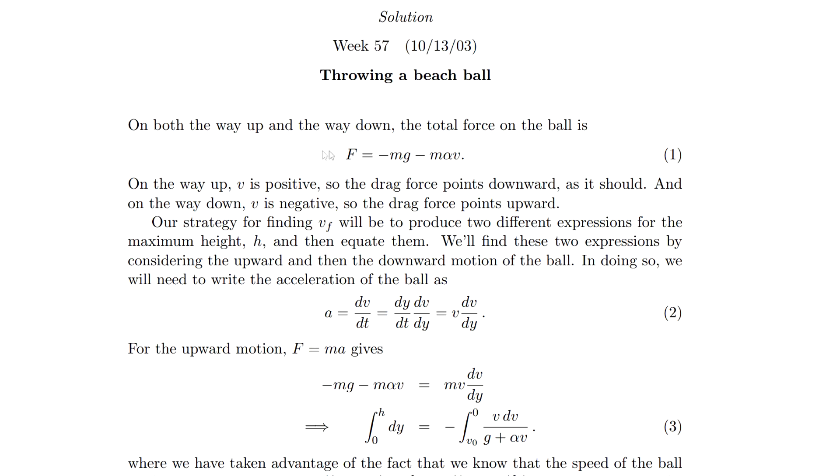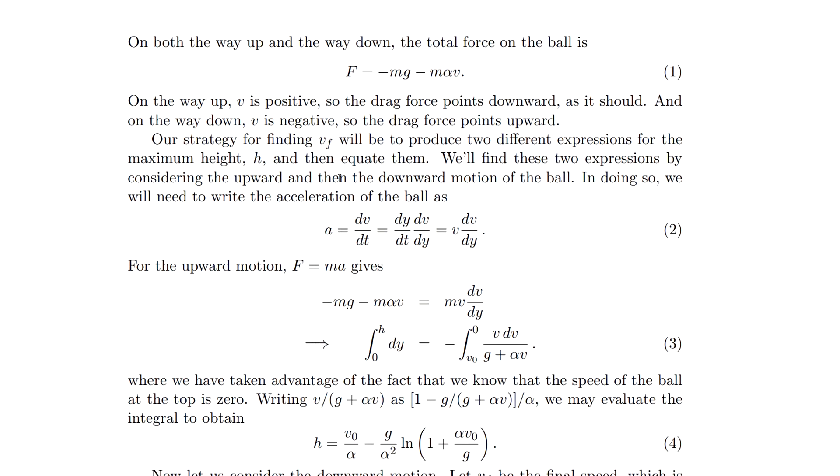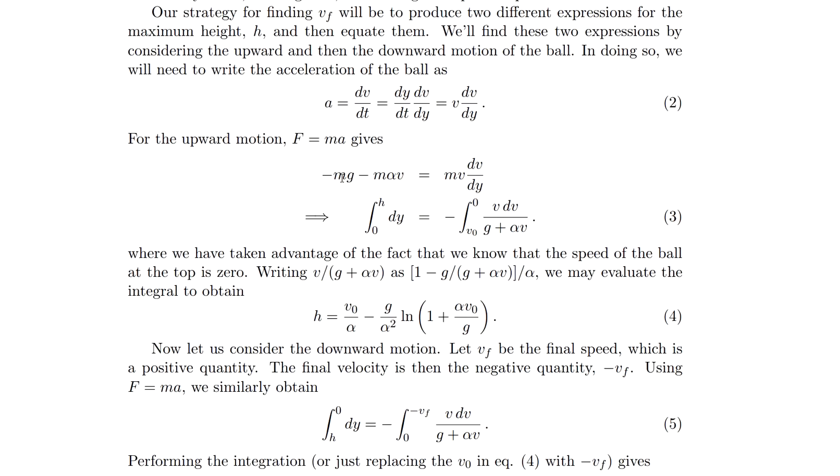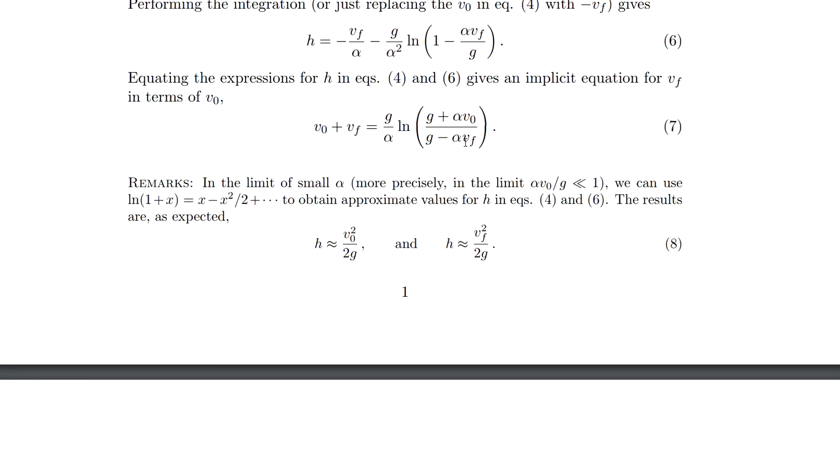On both the way up and down, the total force on the ball is this, so it doesn't change. Okay, so they're taking account of the velocity vector. Maximum height, we equate them. I did find the maximum height. Yeah, I think I got a very similar equation to this. Oh, so that's how they got rid of the drag coefficient. They let alpha equal zero. Oh, that makes sense.